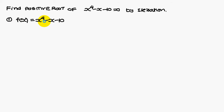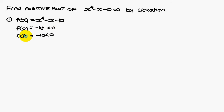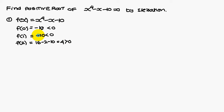Given f of x is x power 4 minus x minus 10. If you substitute 0 in place of x, you are going to get minus 10, which is a negative value. If you substitute 1 in place of x, you are going to get minus 10, which is also a negative value. And f of 2 is plus 4, a positive value.